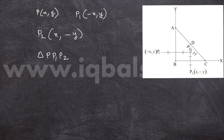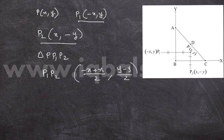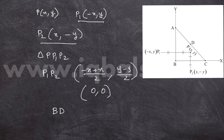Similarly, P2 is the reflection of P on BC, that is the x-axis, so P2 is (x, −y). Now since triangle PP1P2 is a right triangle right-angled at P, the circumcenter is the midpoint of the hypotenuse P1P2. The midpoint of P1P2 is ((−x + x)/2, (y − y)/2) = (0, 0), which is the origin — that is our point B. So the circumcenter of triangle PP1P2 is point B. Also, D is the circumcenter of triangle ABC. So BD is the required distance, and BD = AD = AC/2.